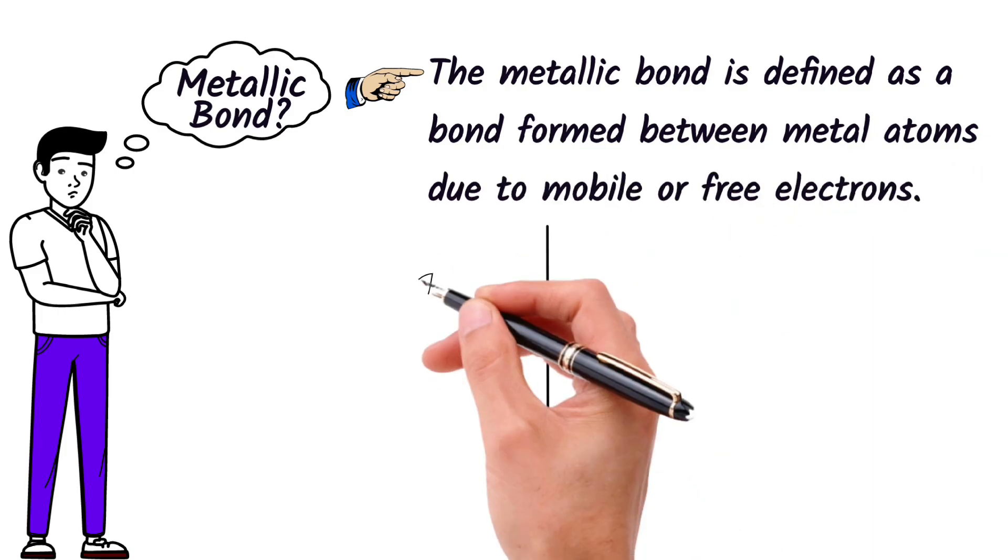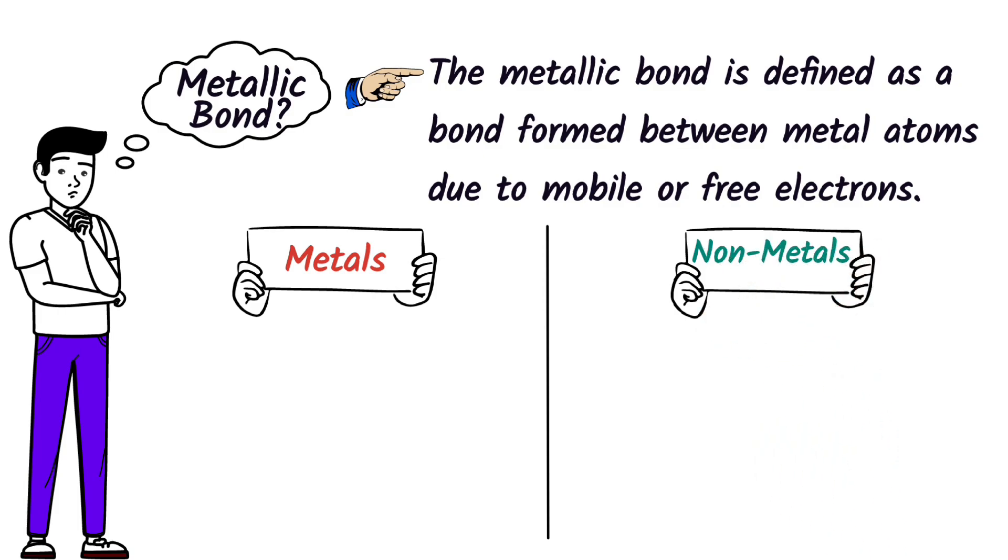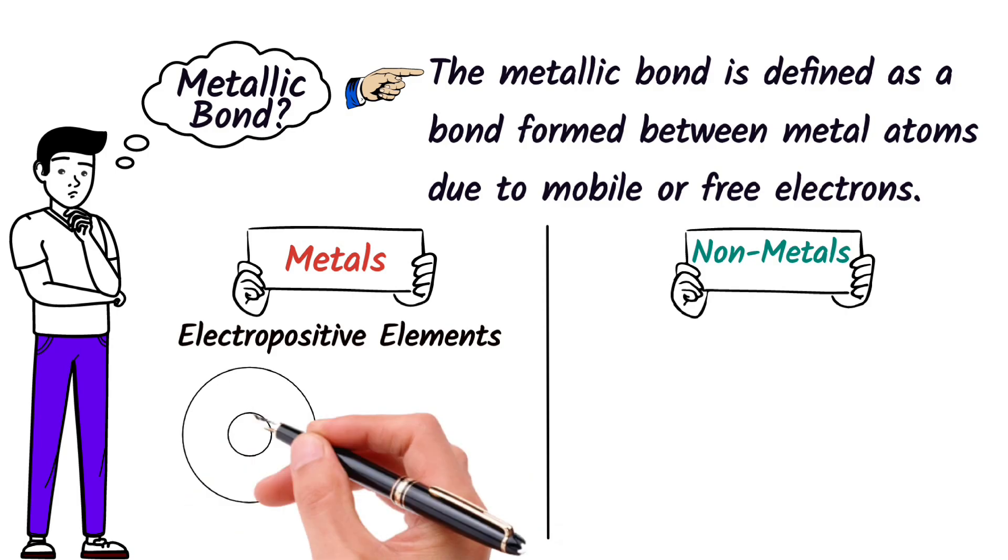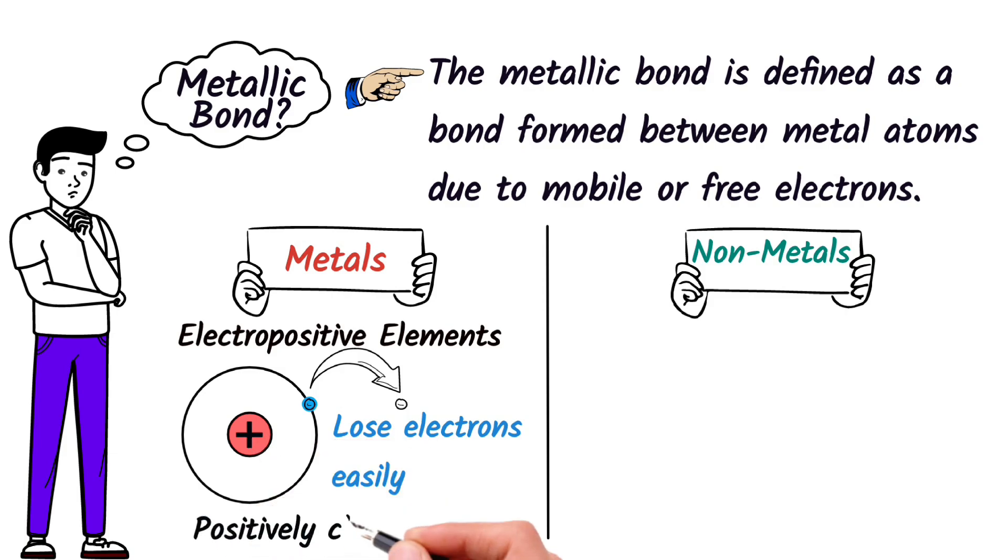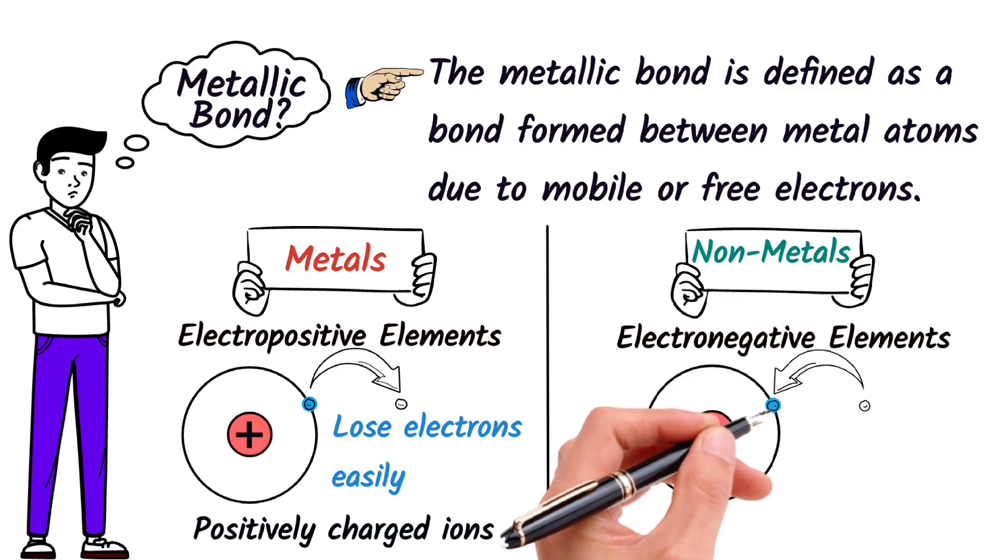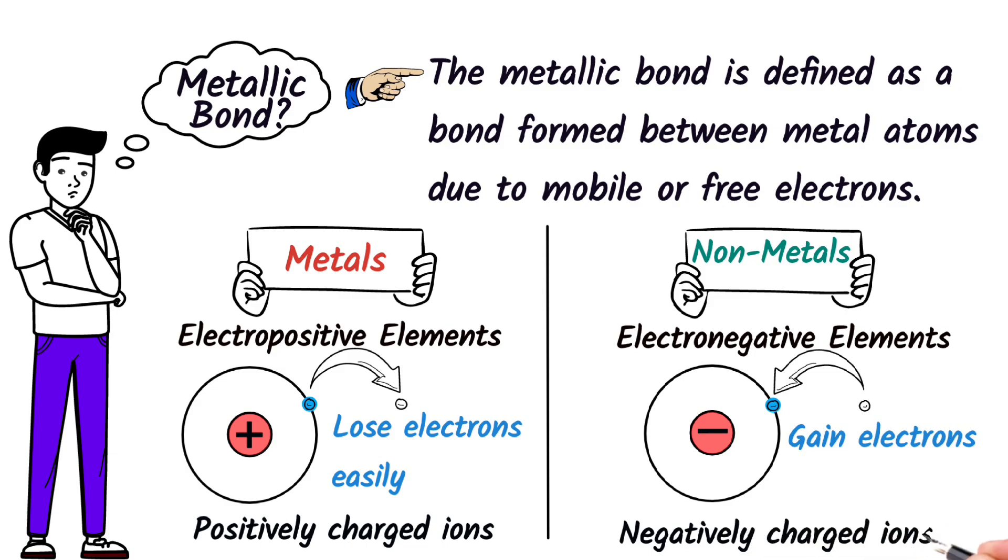Before discussing metallic bonds, let me teach you the basic difference between metals and non-metals. Metals are electropositive elements because they tend to lose electrons easily, and when they lose their electrons, they become positively charged ions. On the other hand, non-metals are electronegative elements because they have a tendency to gain electrons, and when they gain electrons, they become negatively charged ions.